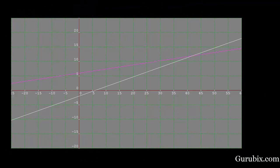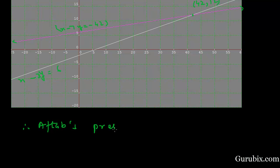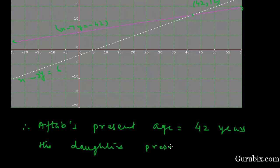We plot the solution sets from both tables on graph paper. We get two lines: the line x minus 7y equals minus 42 and the line x minus 3y equals 6. These two lines meet at the point where x equals 42 and y equals 12. So we conclude that Aftab's present age is 42 years and his daughter's present age is 12 years. This is the solution of the question. Thank you.